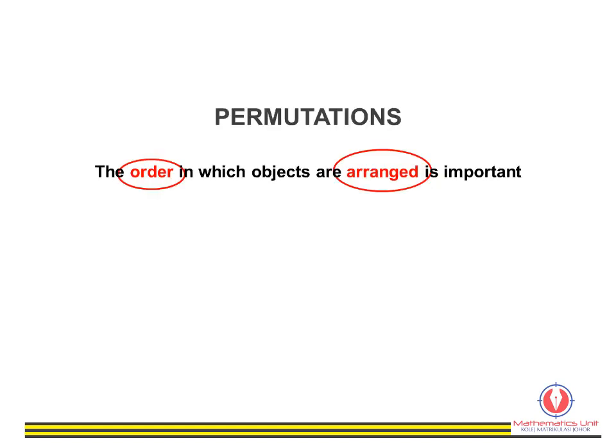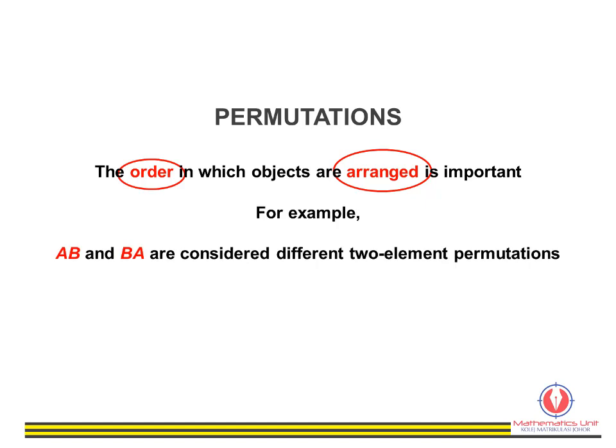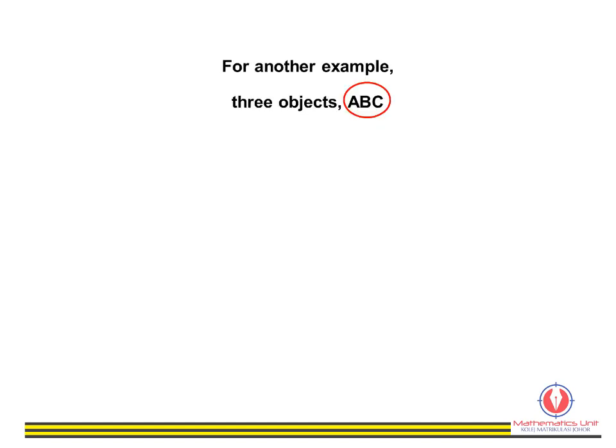Permutations are arrangements of objects where order is important. For example, look at how letter A and letter B are arranged. If A is the first letter and B is the second, it will not be the same arrangement if B is first and A is second — those are two different permutations.